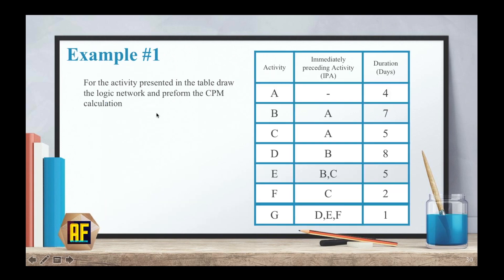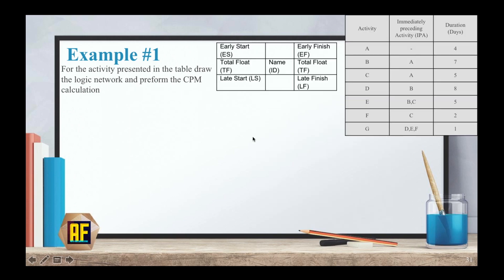Here is our first example. For the activity presented in the table, draw the logic network and perform the CPM calculation. As you can see, we have activity A, B, C, D, from A to G, our preceding activity over here and the duration for each activity. I've just taken the liberty of putting the table from before, so I will have more space to work here in the middle. And if you remember the definitions, I've set them out here in this 3x3 box and each definition is here in its box.